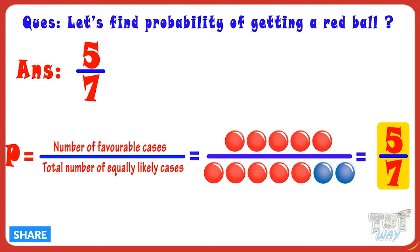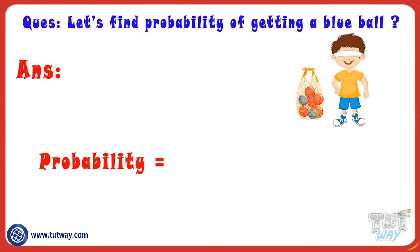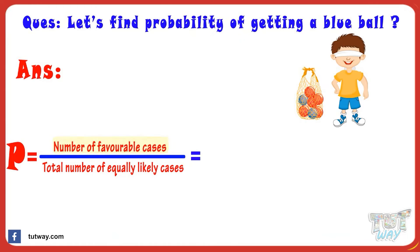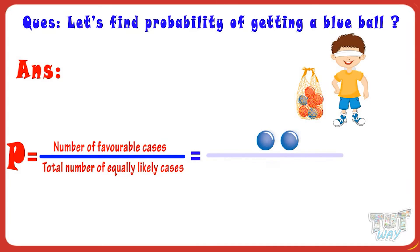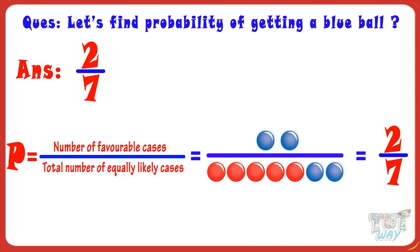Let's take another example. Let's find the probability of getting a blue ball. We know the probability is number of favorable cases divided by total number of equally likely cases. The number of favorable cases are two, as the number of blue balls are two, and total number of equally likely cases are seven, as seven balls are there. So, probability of getting a blue ball is two by seven. Kids, are you getting how we find the probability of our favorable cases?